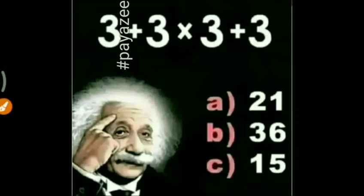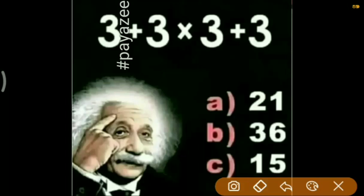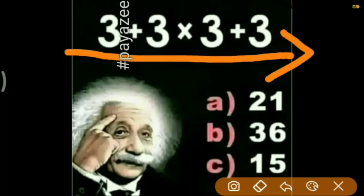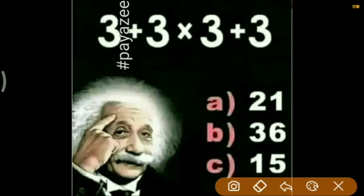Let's solve this puzzle straightforwardly. So directly, it's 3 plus 3 is 6, into 3 is 18, plus 3 is 21. So option A.